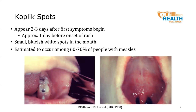So what are Koplik spots? Koplik spots are small, bluish-white dots located in the mouth, particularly the inner lining of the cheeks. These spots occur in approximately 60 to 70% of measles cases and appear about 2 to 3 days after the very first symptoms begin.